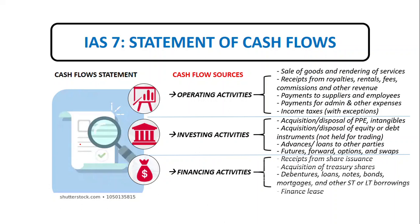Financing activities are cash flows derived from equity capital and borrowings of the entity. This activity normally increases or decreases the structure of equity or capital borrowings. Examples include receipts from share issuances, acquisition of treasury shares, proceeds from debentures, loans, notes, bonds, mortgages, and other short-term or long-term borrowings, as well as finance lease payments and any other finance costs related to finance leases. Cash flow statements are prepared on a cash basis.